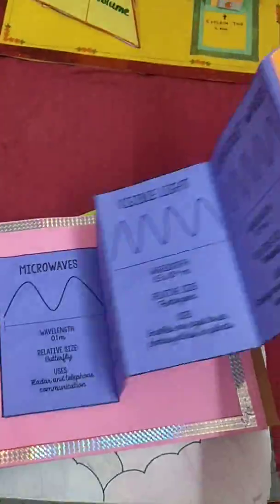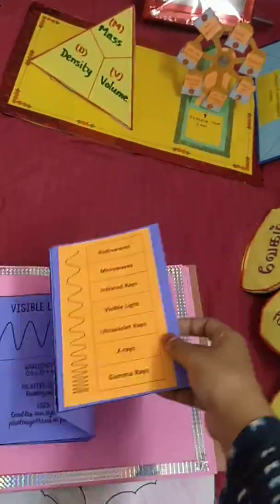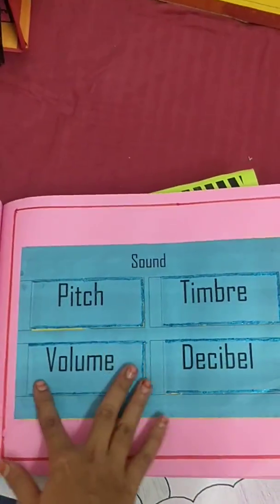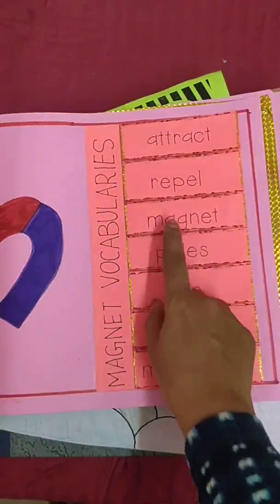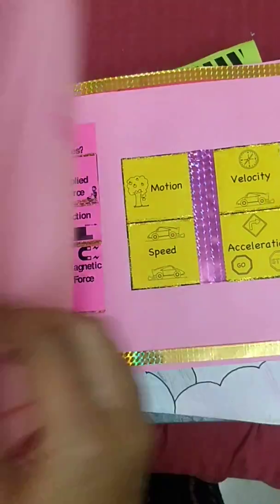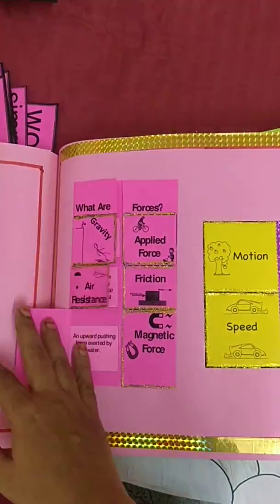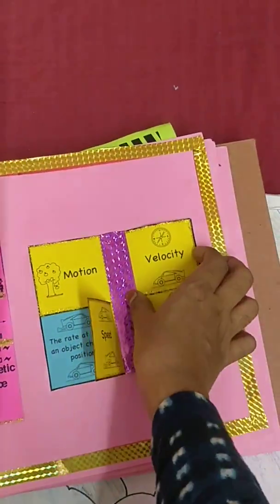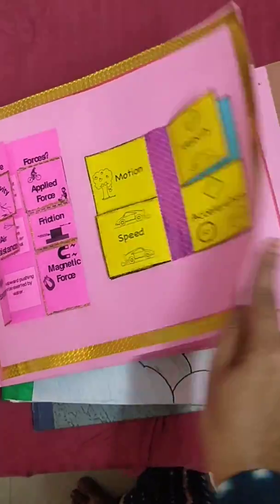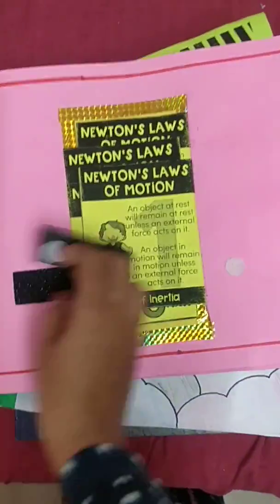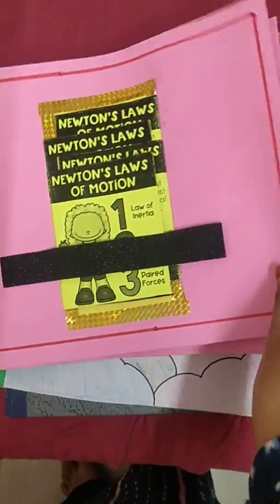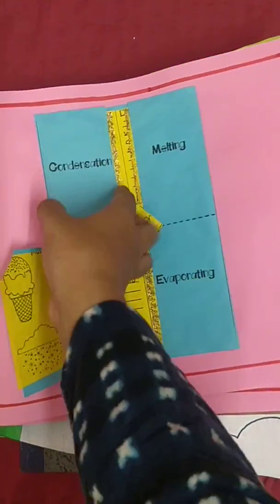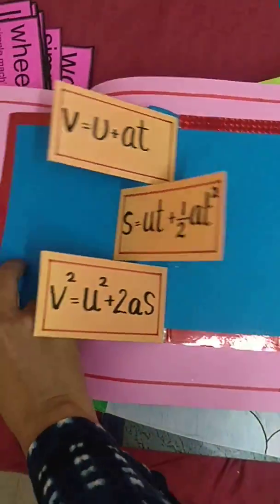Next is the electromagnetic spectrum — you can fold it like this. Then sound — when you open it you get the definition. Magnetic vocabularies explain what each term means and what a magnet is. There are also sections on water forces and their definitions, motion and speed with examples, Newton's law of motion with examples, effects of temperature including condensation, melting and evaporation, and the three equations of motion.